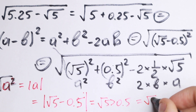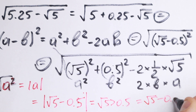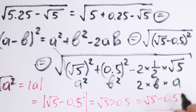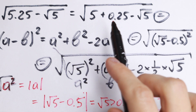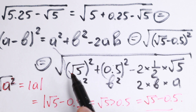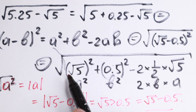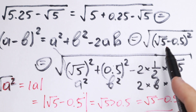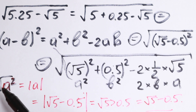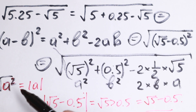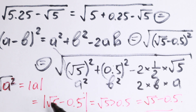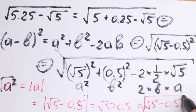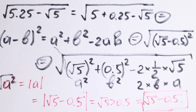The answer is √5 minus 0.5. To summarize: we created the formula (A minus B)², rewrote the expression to match it, substituted back, and used the property that √(A²) equals the absolute value of A. Since √5 is greater than 0.5, we can drop the absolute value, giving us the final answer: √5 minus 0.5.